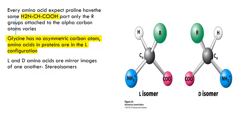Glycine, for example, has no asymmetrical carbon atom. Amino acids are usually in the L configuration. There are also L and D mirror images, called stereoisomers. But usually in nature, we always find L. We rarely find the D isomer.